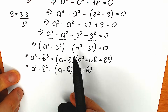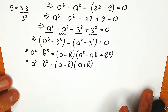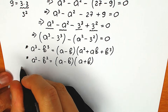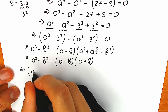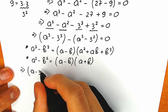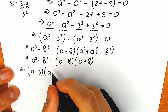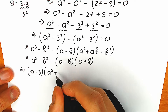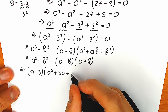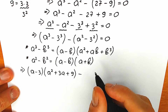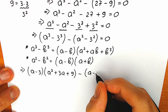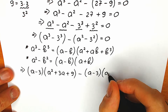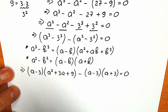Let's start with the cubes. Applying the difference of cubes formula, we get (a minus 3)(a² plus 3a plus 9). Then applying the difference of squares formula to the second group, we get (a minus 3)(a plus 3). I really hope you understand how to apply these formulas. If you have a problem with it you can easily practice both formulas.